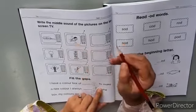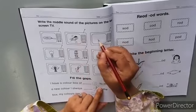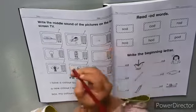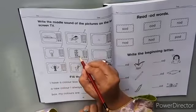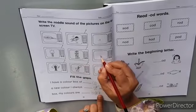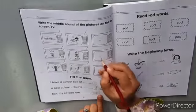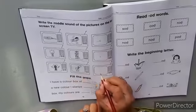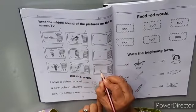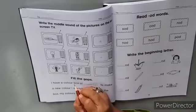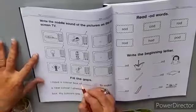Now we write here A. Middle sound kaunsi hai? A. Dim, fit - T. Koun batayega? Shabash. Isme ham aayega E. Wig, mix - isme bhi middle sound E aayega. Okay, now fill the gaps.